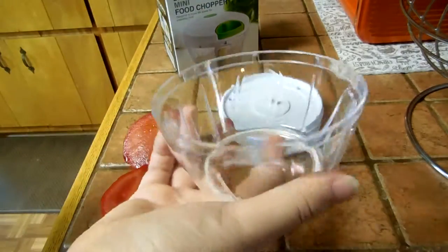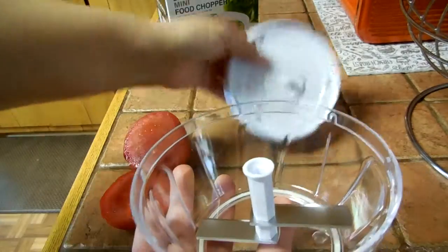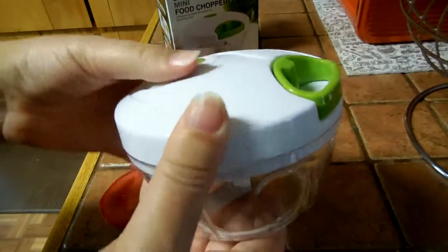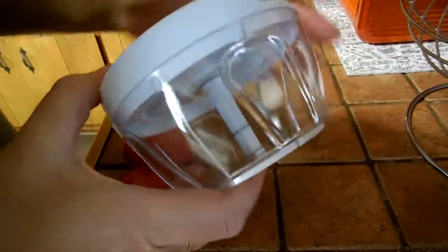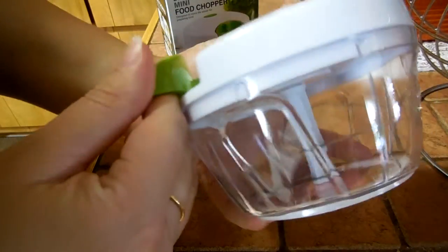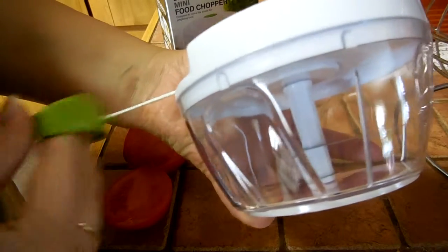You have the bottom bowl, you have the blades, and then you have the top, and it clicks into place. When you put your food in here, you hold it tight with one hand and you pull this cord. When you pull it, you can see the blades moving, and it chops your food up.